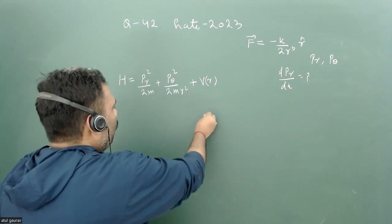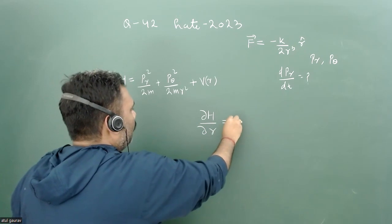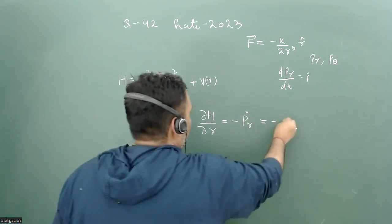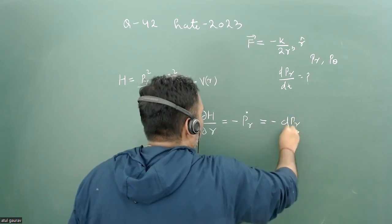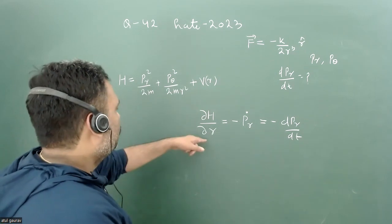When we go for the Hamiltonian equation of motion, del H/del r equals minus pr dot, which is nothing but minus dpr/dt. When we do this differentiation, this is partial with respect to r.